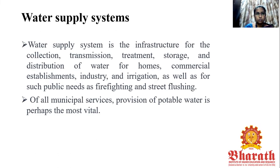Under Water Supply Systems, we are going to see the definition for Water Supply System. Water Supply System is the infrastructure for various works like collection, transmission, treatment, storage and distribution of water for homes, commercial establishments, industry and irrigation as well as for public needs and also for firefighting and street flushing. Provision of portable water is more significant for the public use, so we have to go for the treatment of water before distributing it to the public.